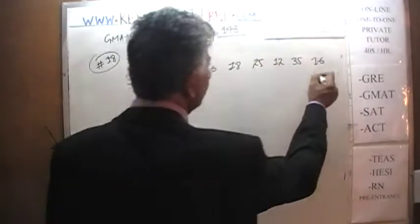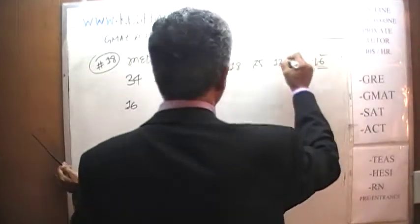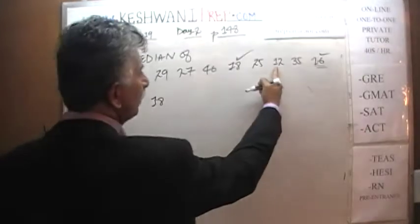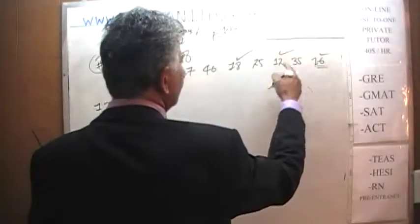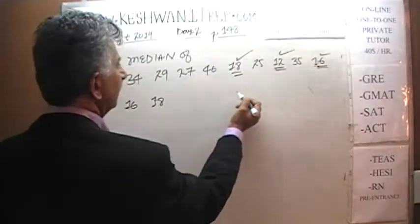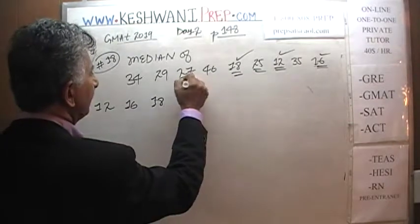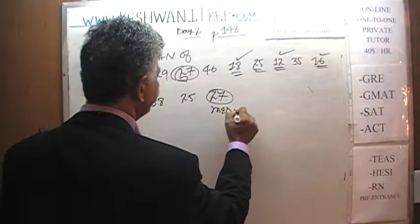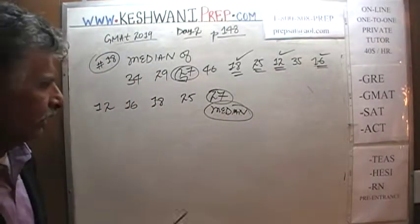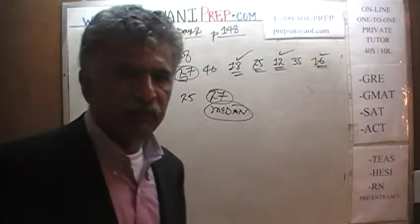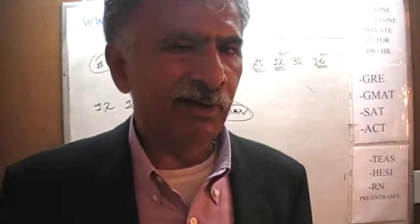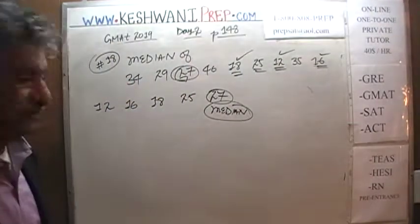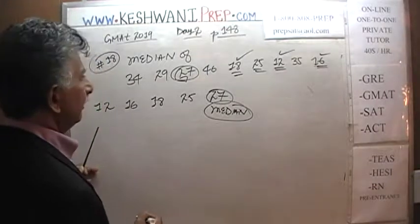Let's arrange them in order. I see twelve is the smallest, then sixteen, eighteen, twenty-five, and the next one is twenty-seven. Twenty-seven is the median. We don't have to do any more work. On a real exam you can stop right there — it doesn't matter what the next four are. We just want the fifth observation when the observations are arranged in ascending or descending order, because the fifth gives us four on the left and four on the right.